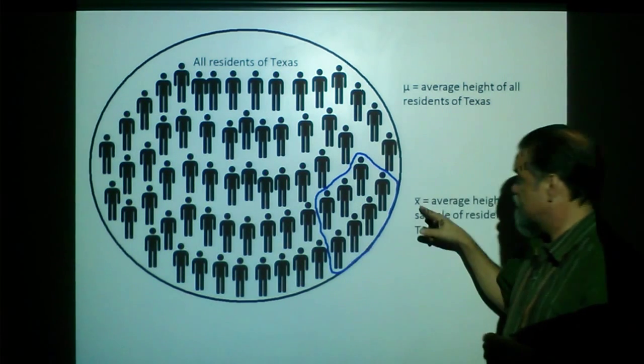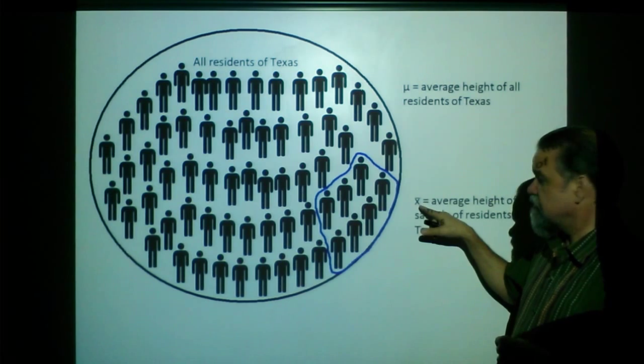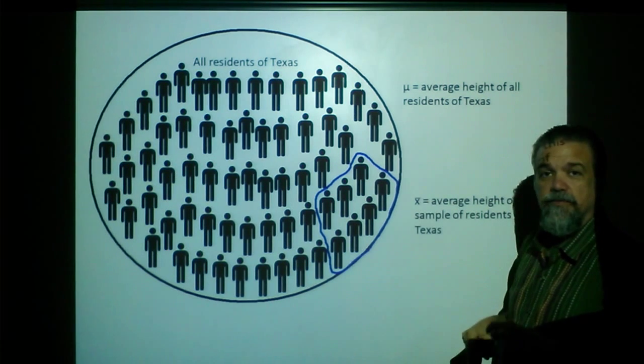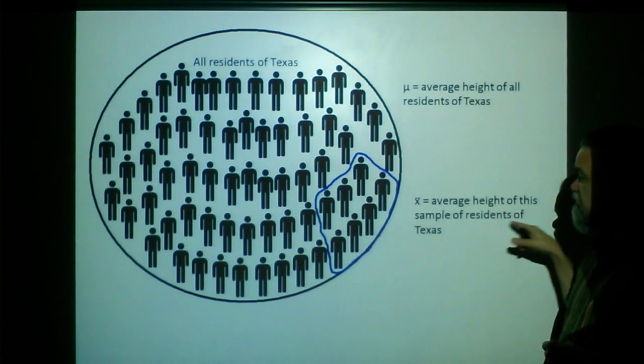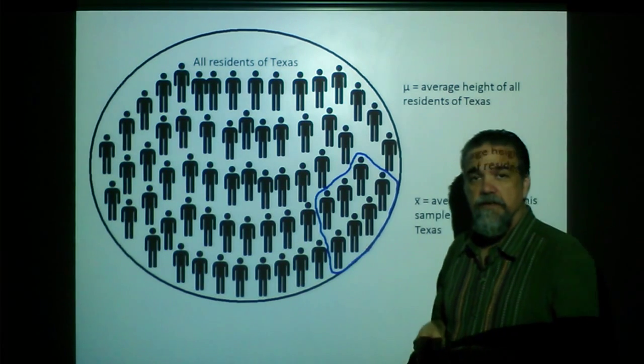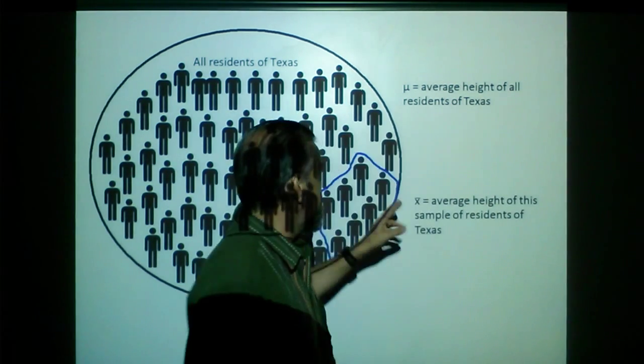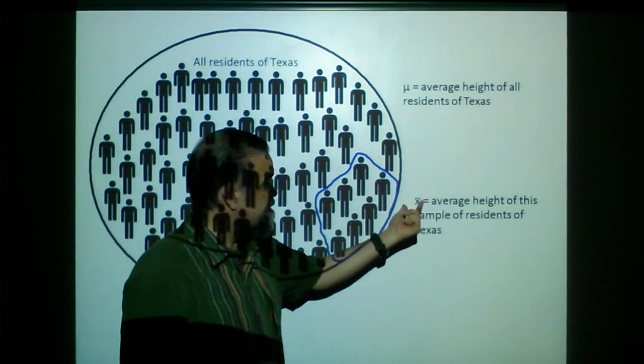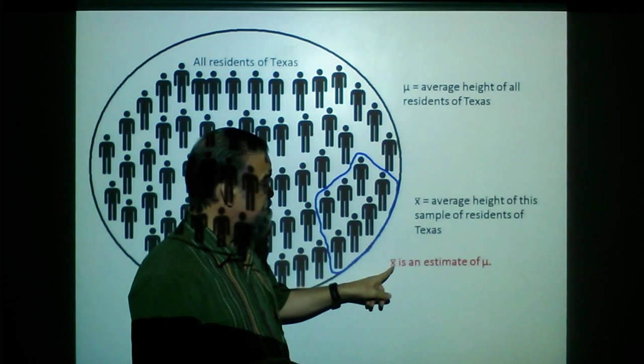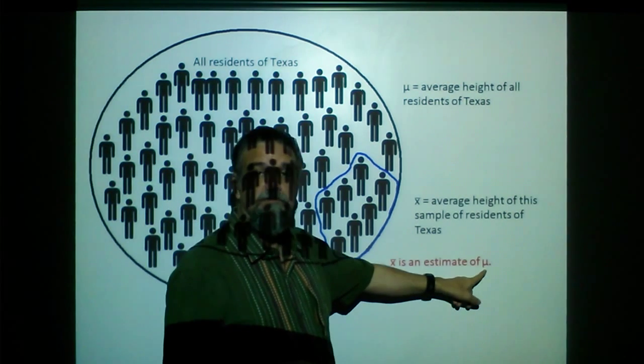So, what I get is this measurement right here, an X with a little line over it that we call X bar, and that's the average height of this sample of residents of Texas. So, my sample is gonna be representative of everyone, and I get this average, and what I say is, this X bar, it's an estimate of mu.